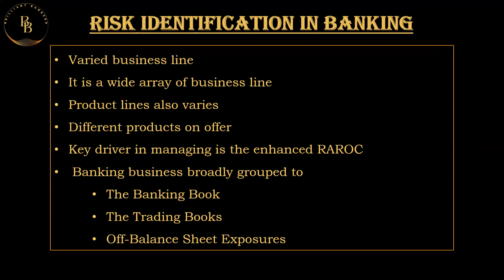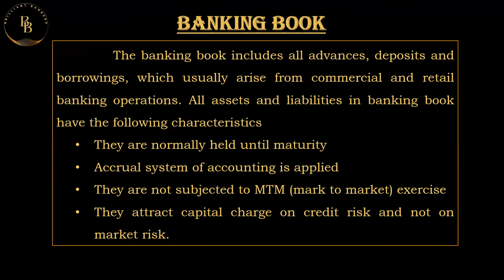From the risk management point of view, banking business lines may be grouped broadly under three heads: the banking book, the trading book, and the off-balance sheet exposure. The banking book includes all advances, deposits, and borrowings, and is usually used for commercial and retail banking operations. All assets and liabilities in the banking book are normally held until maturity and the accrual system of accounting is applied.